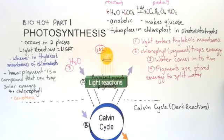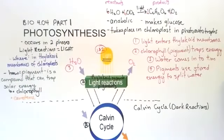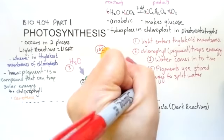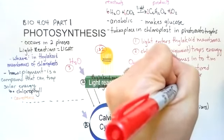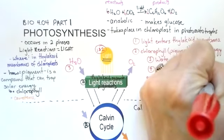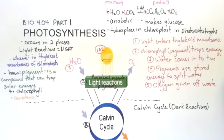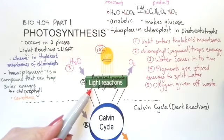The pigments use the stored energy to split the water. We don't want the oxygen. The oxygen is waste. And so the reason this arrow indicates out is the oxygen goes away. The oxygen is given off as waste. So what happens to the hydrogen? Well, that's interesting.